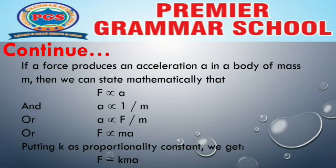F is directly proportional to ma. Putting k as the proportionality constant, we get: proportionality sign ہٹا کر equal کا sign لگایا اور ایک proportionality constant k لگا دیا۔ The resultant equation, which we call the Second Law of Motion, is: F = kma.